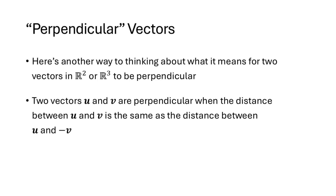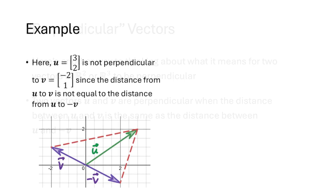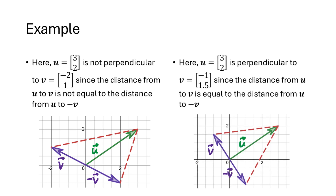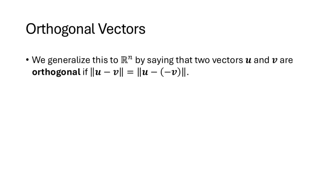Two vectors u and v are perpendicular when the distance between u and v equals the distance between u and minus v. Looking at pictures, when vectors are not perpendicular the distances differ; when they are perpendicular those distances are equal and the vectors form a right angle. We generalize this to Rn by saying u and v are orthogonal if the norm of u minus v equals the norm of u minus negative v — i.e., the norm of u plus v.